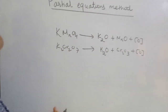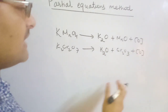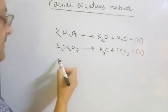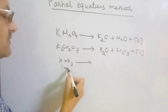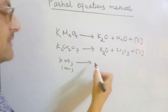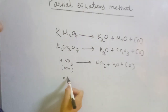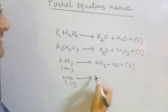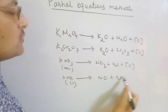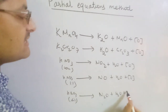So wherever potassium dichromate is involved in the reaction, it gives potassium oxide, chromic oxide, and nascent oxygen. Similarly, if nitric acid is involved, it gives different kinds of products depending on its concentration. Concentrated nitric acid always gives NO₂ plus water plus nascent oxygen. Moderately concentrated nitric acid gives NO plus H₂O plus nascent oxygen. Dilute nitric acid gives N₂O plus water plus nascent oxygen.